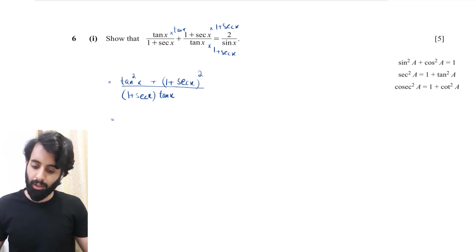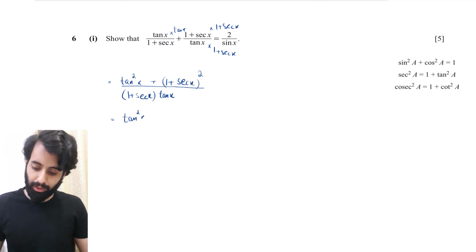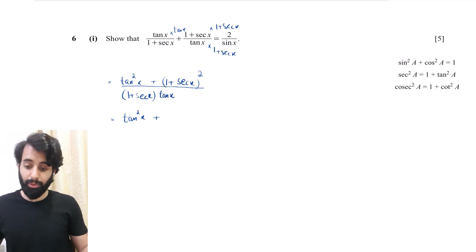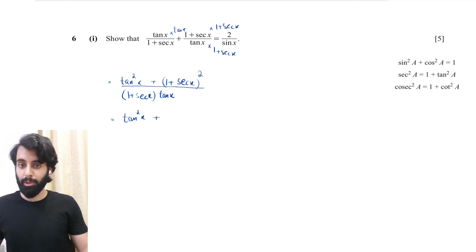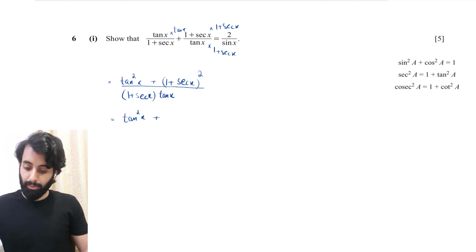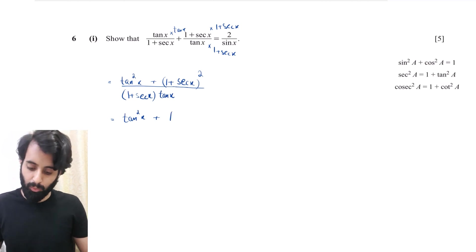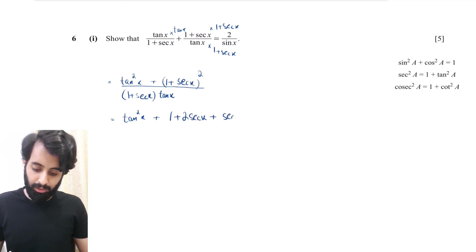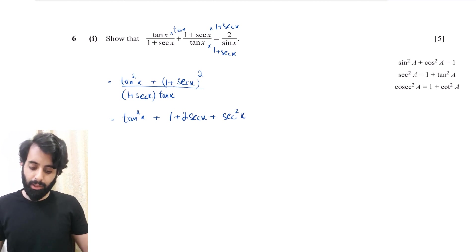Now I'll expand the numerator. There's nothing to simplify with tan squared x, so I leave it as is. For (1 + sec x) squared, remember to use the identity — this expands to 1 + 2 sec x + sec squared x.